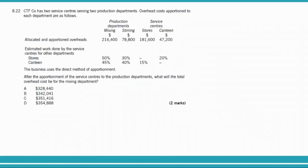The final question: CTF company has two service centers serving two production departments. The departments are mixing and stirring (production) and stores and canteen (service cost centers). After apportionment of the service centers to the production departments, what will the total overhead cost be for the mixing department? We use the direct method — service centers do not charge each other, only the production departments.